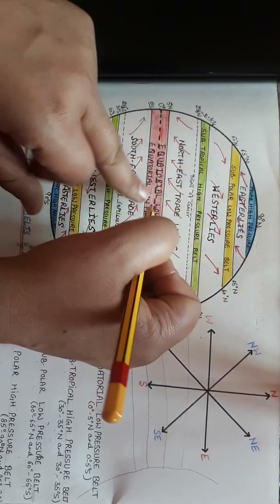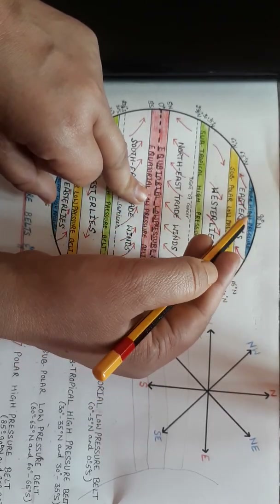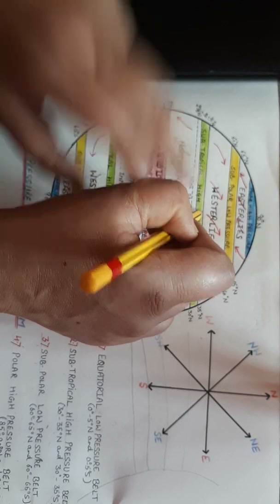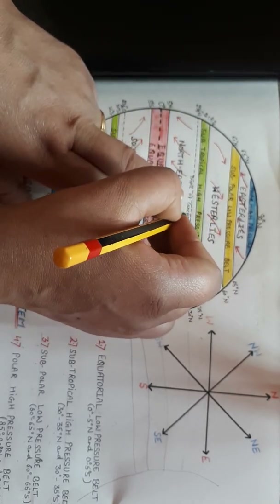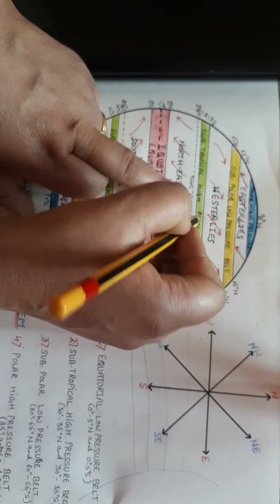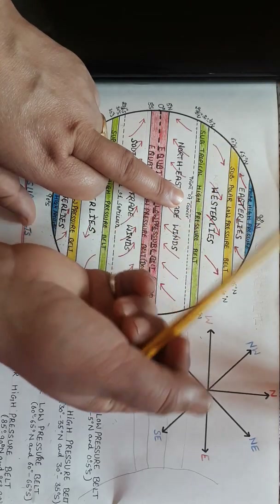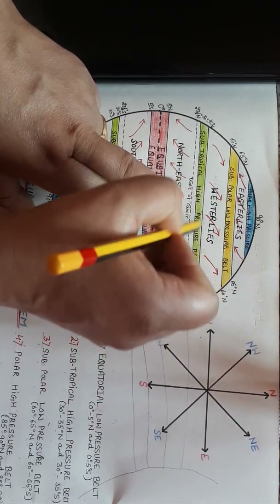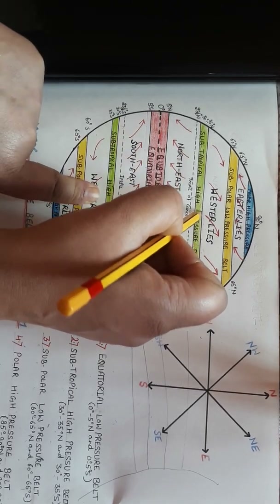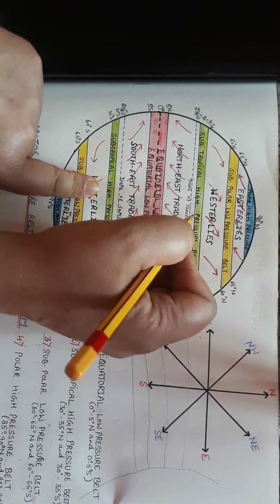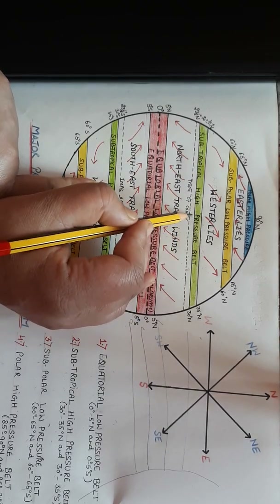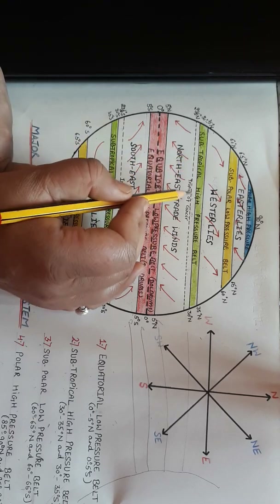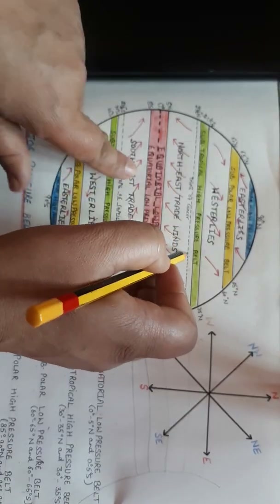This sinking cold air creates a high pressure belt. So from the equatorial low pressure belt, air moves towards the polar region, but when it reaches approximately 25 to 35 degrees latitude — in the troposphere at around 10 to 12 kilometers altitude — the air loses heat, becomes cold, and around 25 to 35 degrees north and south the cold, heavy air sinks, thereby creating the subtropical high pressure belt.